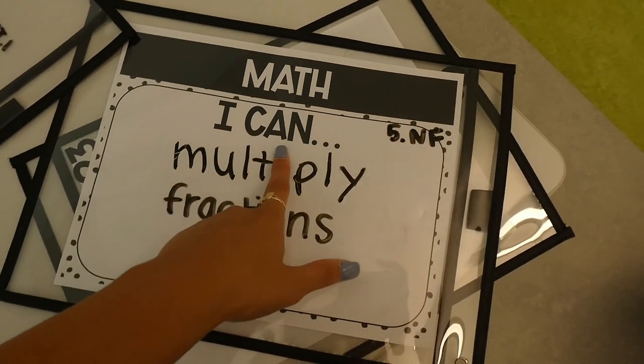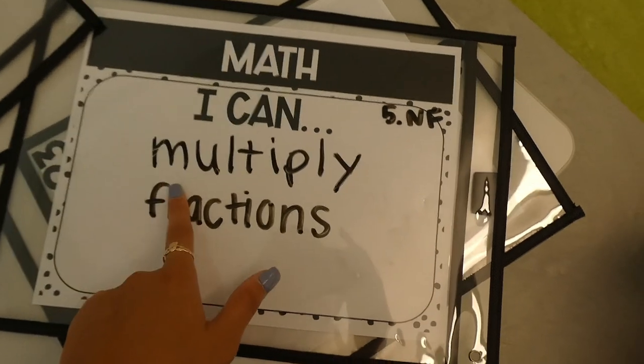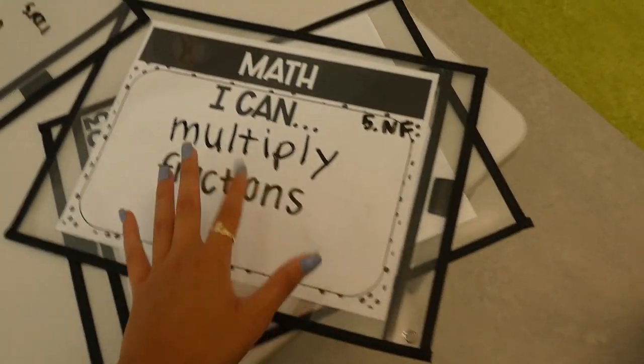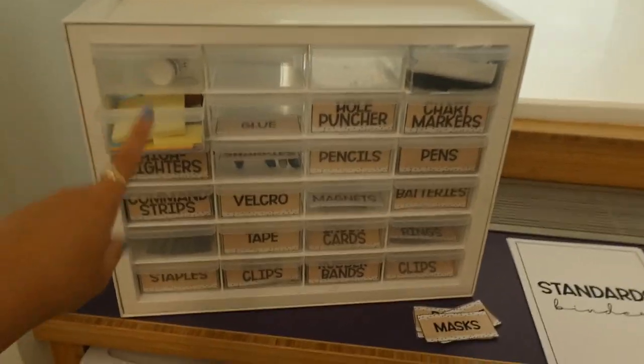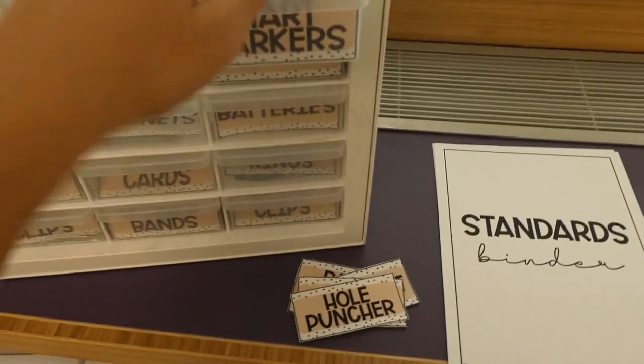So I have these printable I-can statement posters as a freebie on my Teachers Pay Teachers, but I actually updated mine so I'm recycling these and I'll print the new ones. It's pretty similar. I know I'm going to be changing these labels, I'm just taking these all out and then next time I'll probably replace them.